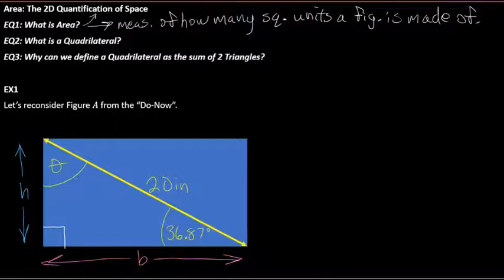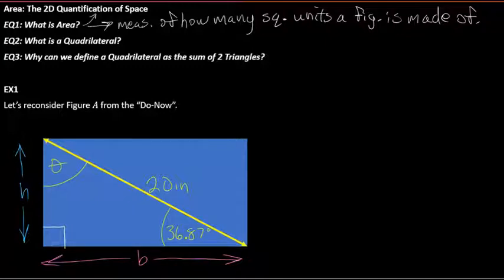Area is a two-dimensional measure of space. We have one-dimensional measure, which is distance — perimeter is also a form of distance, so it's one-dimensional. Then you have two-dimensional area and surface area. And then the three-dimensional measure of space is volume, which we'll get into later. Right now we're going to focus on the two-dimensional.